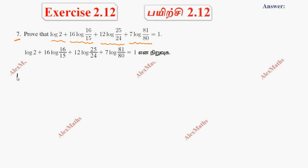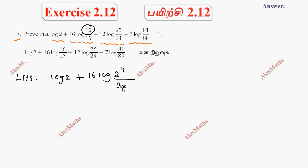We are going to get the first term, log 2 — the simplest term. Plus 16 log of 16/15, where 16 equals 2 to the power 4, and 15 equals 3 times 5. Then plus 12 times log of 25/24, where 25 equals 5 squared. For 24, we factorize: 2 times 12.